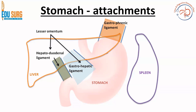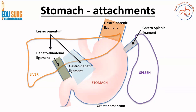Coming to the other side — the greater curvature — the attachment to the diaphragm is the gastro-phrenic ligament. The attachment to the spleen is the gastrosplenic ligament, which contains the short gastric vessels. Then you have the entire greater omentum on the greater curvature of the stomach. The greater omentum has four layers — two anterior and two posterior — the anterior layers attached to the stomach and the posterior layers attached to the mesocolon, colon, and then to the lower border of the pancreas.